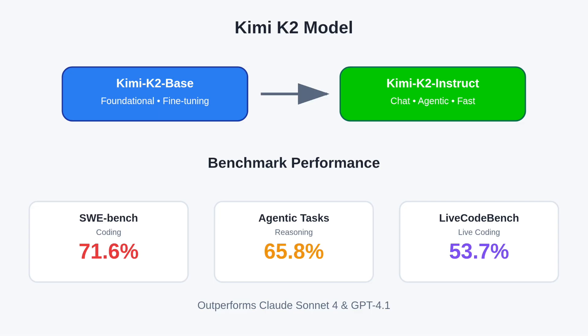On benchmarks, Kimi K2 outperforms Claude Sonnet 4 and GPT-4.1 in coding and agentic reasoning, with 71.6% on SWE Bench, 65.8% on agentic tasks, and 53.7% on Live Code Bench.